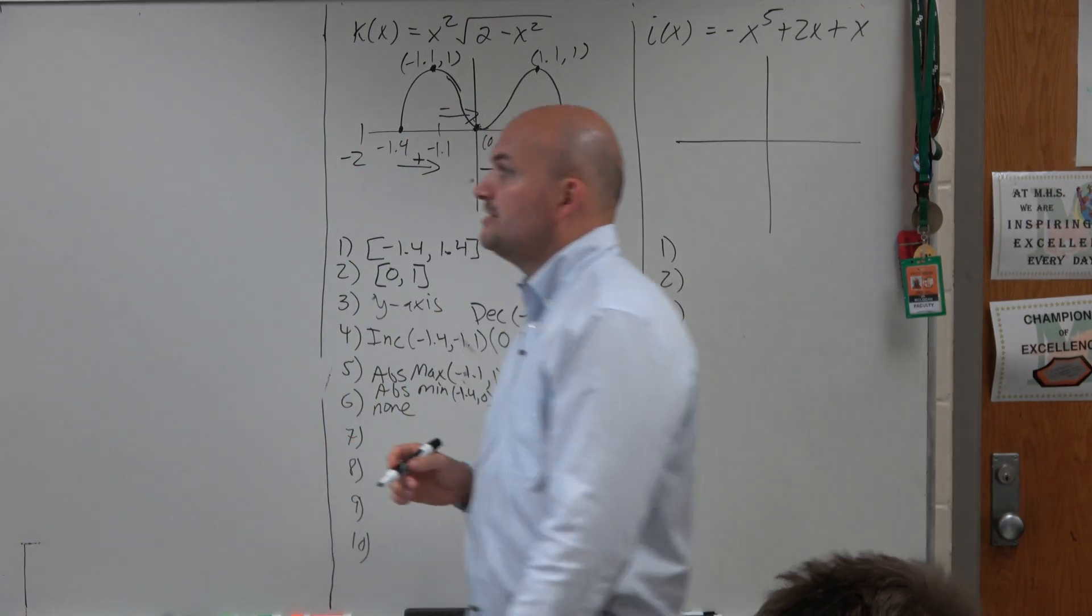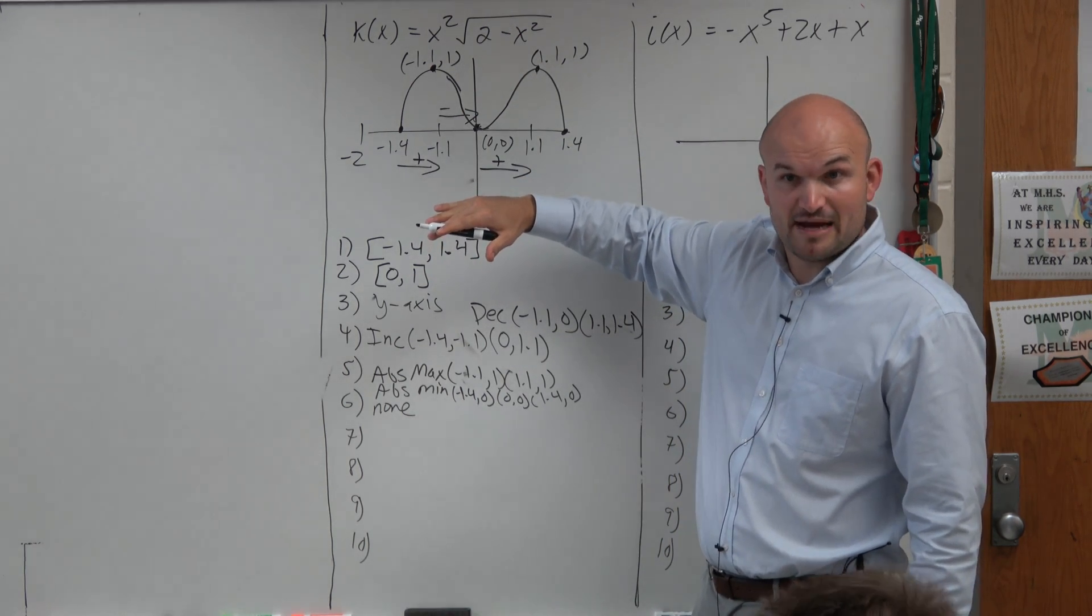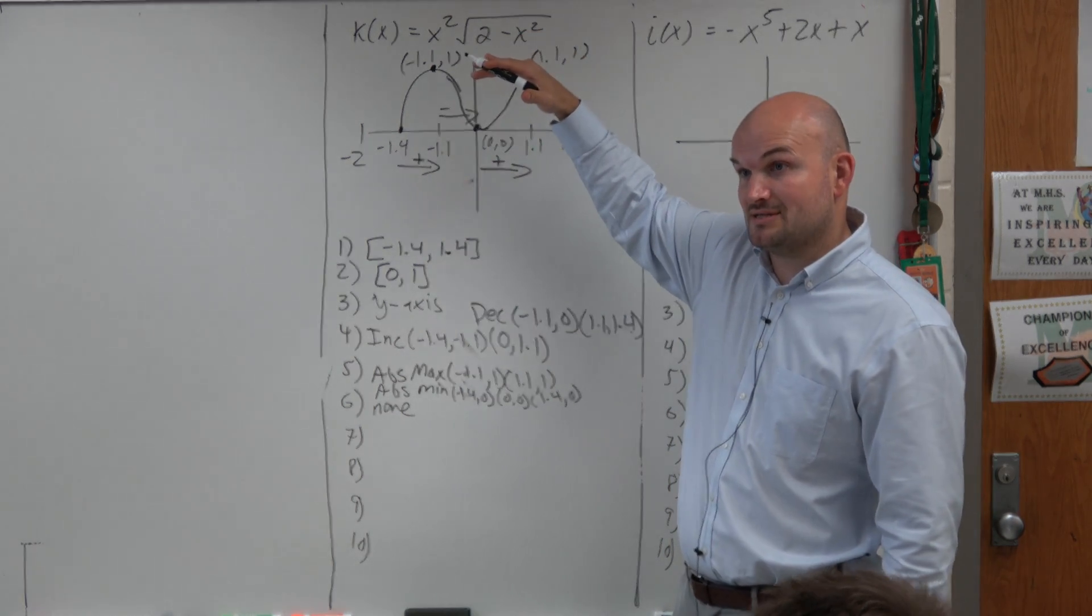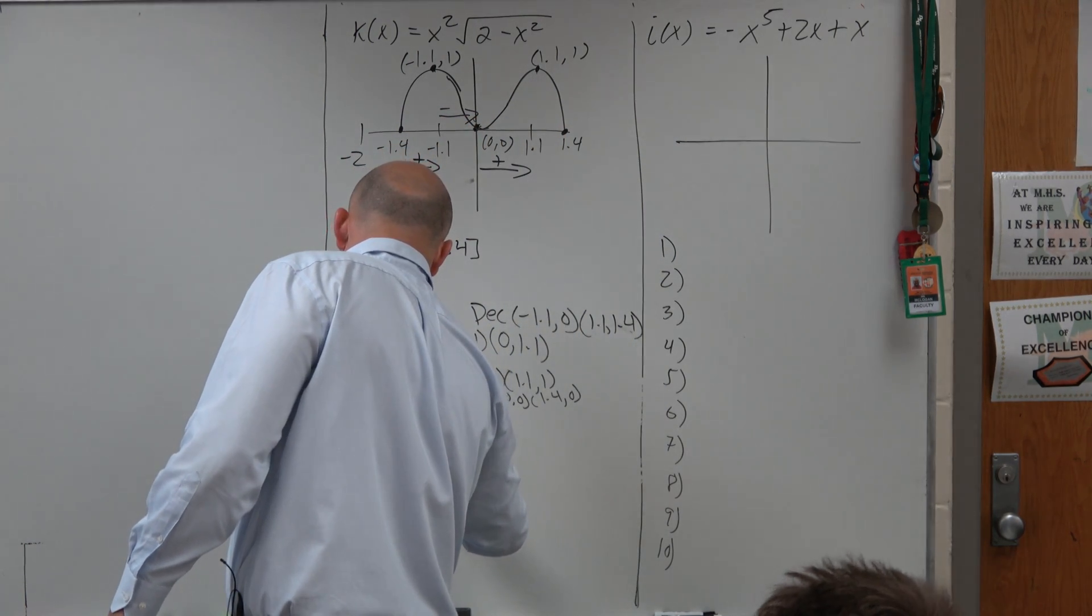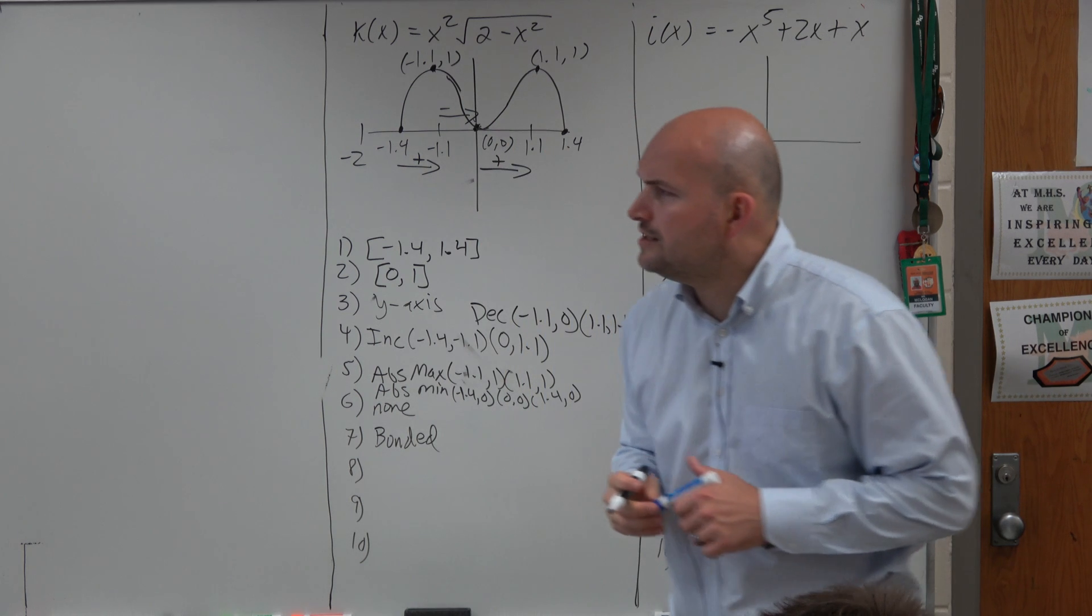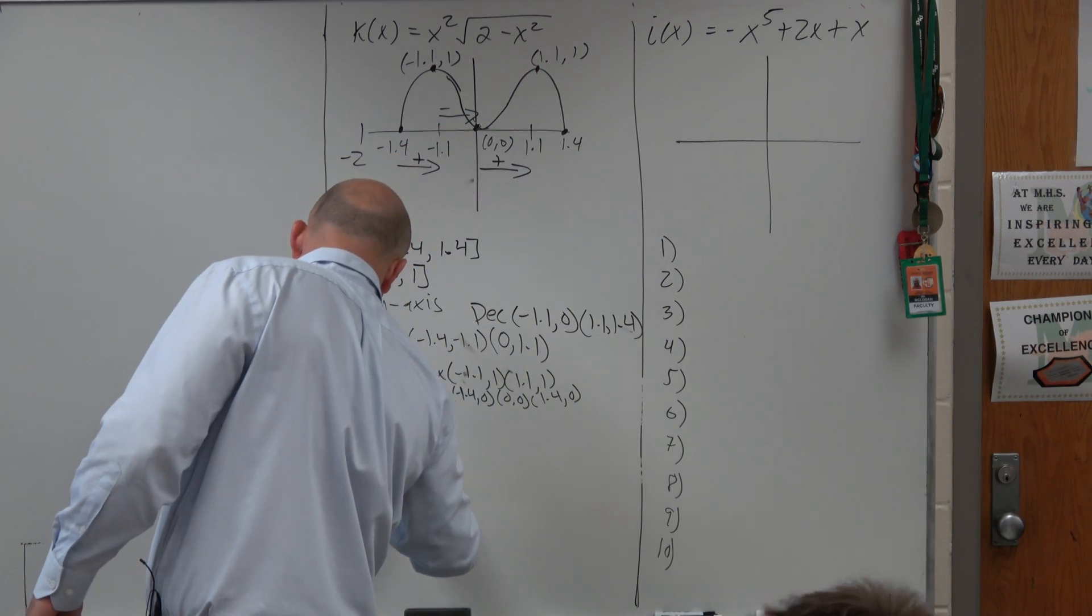For number 7, is it bounded above or below? So is there a minimum value? Does it have an absolute min? Does it have an absolute max? Yeah, so it's bounded above and below. So we just call that bounded. Number 8, is it even, odd, or neither? Since it's symmetric about the y-axis, it's even.